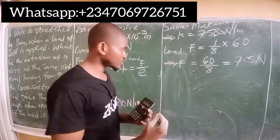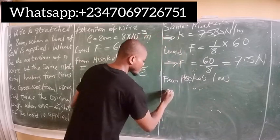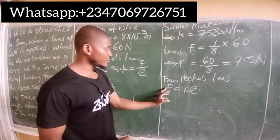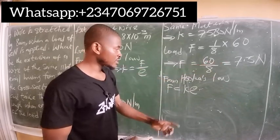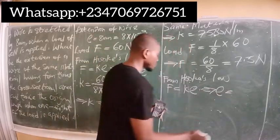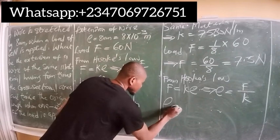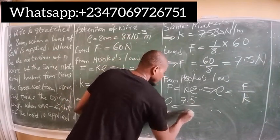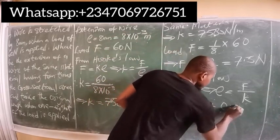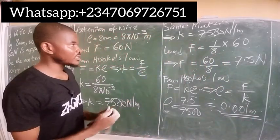From Hooke's Law, force equals k times extension. The spring constant remains 7500 N/m and the new force is 7.5 newtons. Making extension the subject: e equals force divided by k, so e equals 7.5 divided by 7500, which equals 0.001 meters. This is the extension of the new wire when one-eighth of the force is applied.